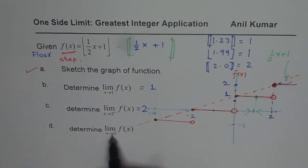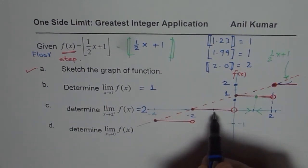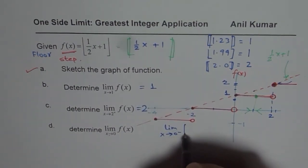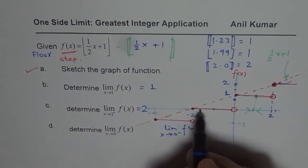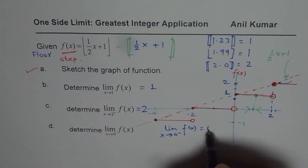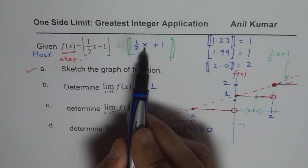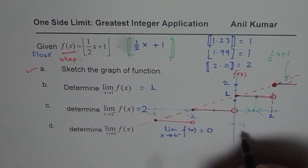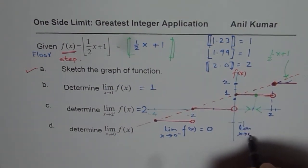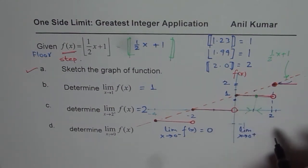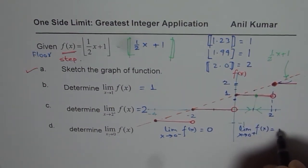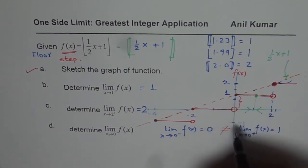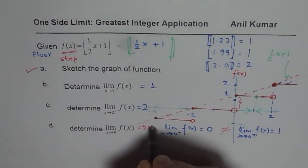For the limit as x approaches 0: approaching from the negative side, the inner value is slightly less than 1 (0-point-something), so the greatest integer is 0. Approaching from the positive side, the inner value is slightly greater than 1, so the greatest integer is 1. Since the left-hand limit (0) and right-hand limit (1) are not equal, the limit as x approaches 0 does not exist.